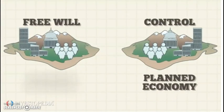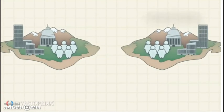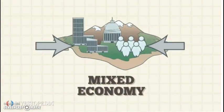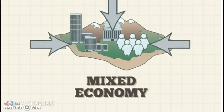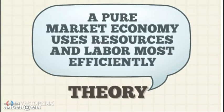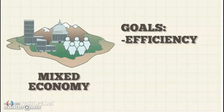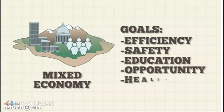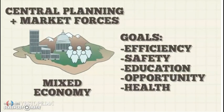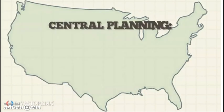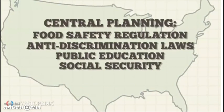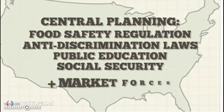In reality, there are no pure market economies in the world, and few pure planned economies. Most countries, such as Western democracies, are mixed economies — operating partly according to market forces and partly according to centrally planned rules. While theory states that a pure market economy uses resources and labor most efficiently, democracies have additional goals such as minimum levels of safety, education, opportunity, and health. For example, the US uses centrally planned forces such as food safety regulation, anti-discrimination laws, public education, and social security to distribute certain benefits more evenly.